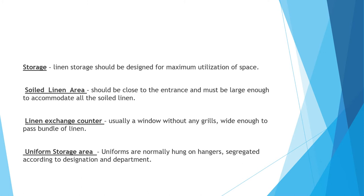The third element is a linen exchange counter — a window wide enough to pass a bundle of linen through in both directions, so the linen room operator can receive soiled linen and issue fresh linen. The fourth is a uniform storage area. In some hotels the uniform room and linen room are the same, so proper provision should be made to hang uniforms, with folded uniforms segregated department-wise and designation-wise.